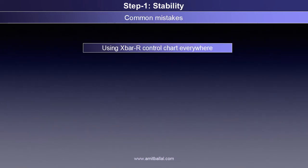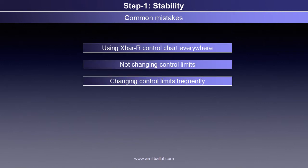One of the major mistakes people make is using the X-bar R control chart everywhere without considering whether it is appropriate based on the situation. Selection of the control chart should be done properly in order to get desired results. Another mistake is keeping the control limits fixed or changing them too often. If the process is not showing special causes, the control limits can be recalculated based on the available data. And if the process is changed — for example, by taking actions on special causes — control limits should be recalculated to suit the changes. Once sufficient time is given for studying and understanding the process using a control chart, and after the confidence is built that the process is under control, that is stable, we can move to the next step: normality.